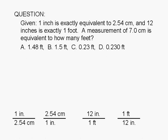Since we are given that one inch is equivalent to 2.54 centimeters, we can write a conversion factor with one inch in the numerator and 2.54 centimeters in the denominator. Or we can write a conversion factor with 2.54 centimeters in the numerator and one inch in the denominator.